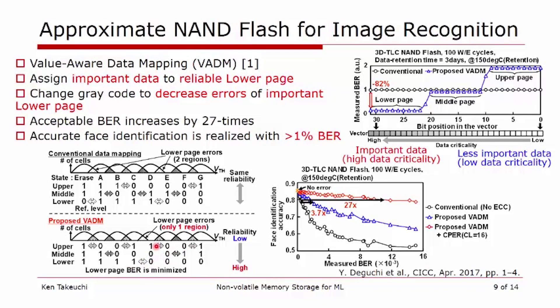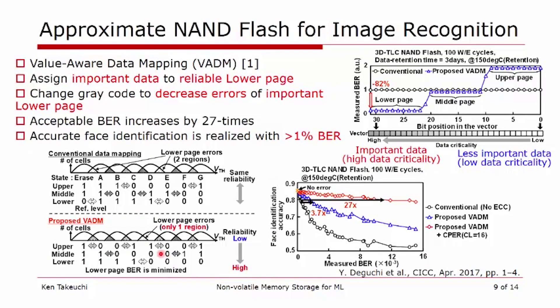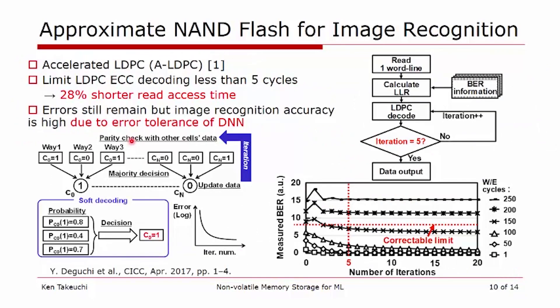This is another example to enhance the performance of NAND flash. In a NAND flash there are errors, and we use ECC to correct them. For example, with LDPC, errors are gradually decreased by repeating the decoding. If we have to completely eliminate errors, we must repeat decoding like 20 times, which takes a lot of time. But if errors are acceptable for the application, we can stop decoding at just five decode iterations. Although errors remain, it's acceptable because the deep neural network is error-tolerant. As a result, we can achieve a performance gain of 28%.